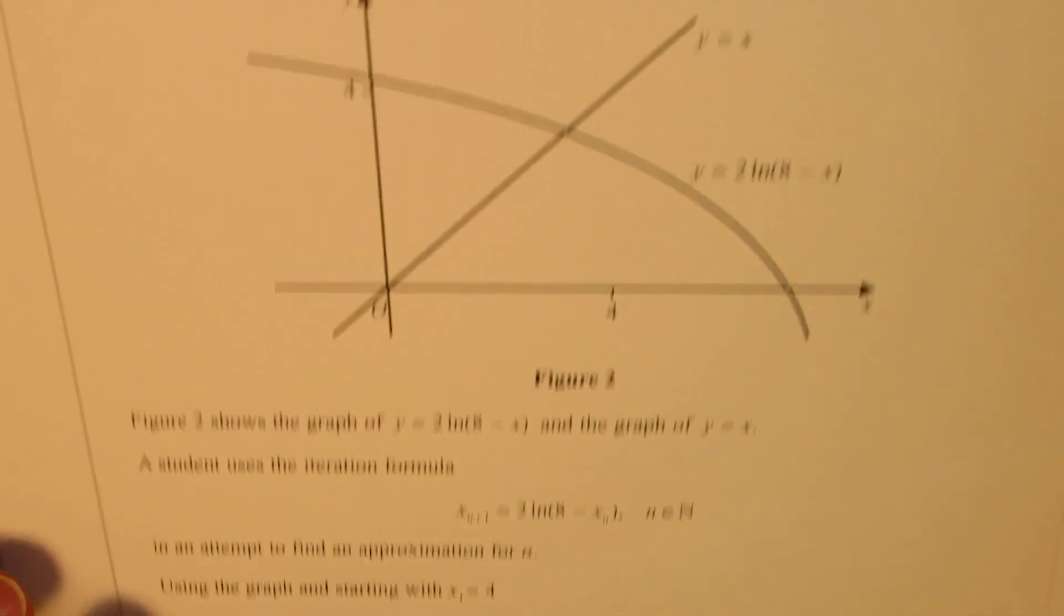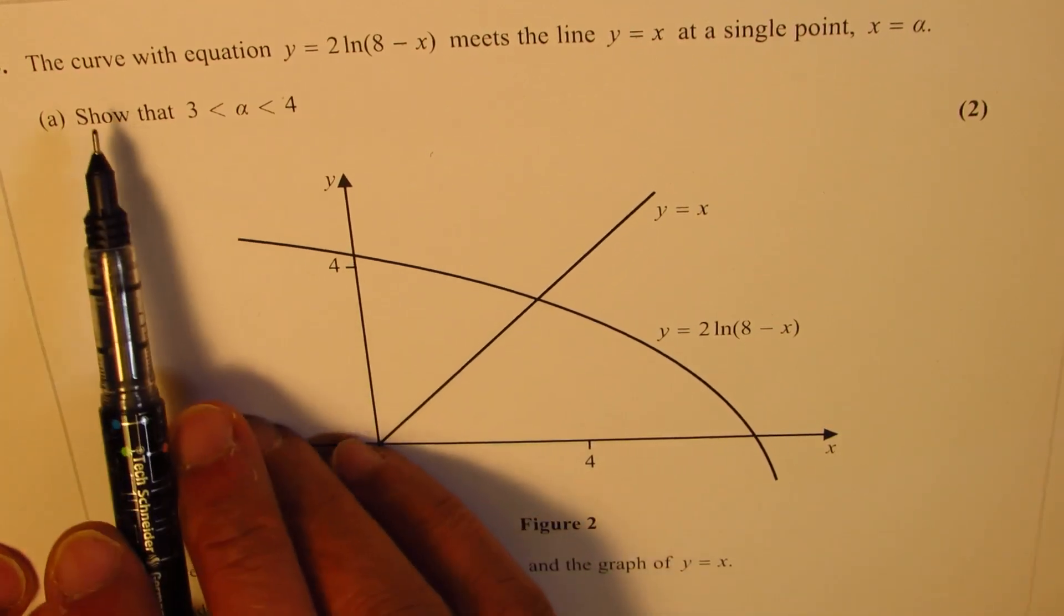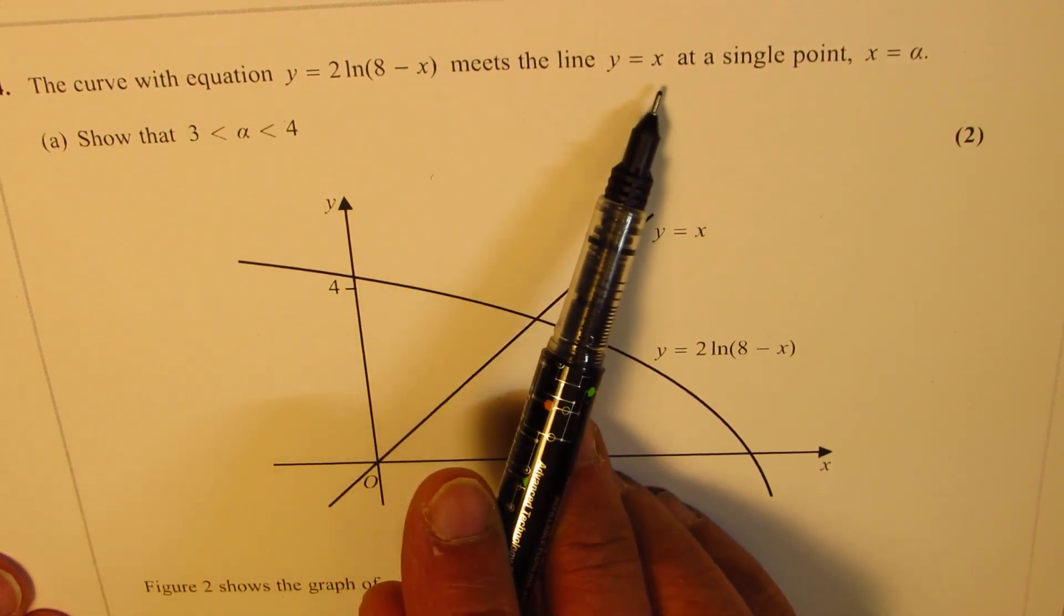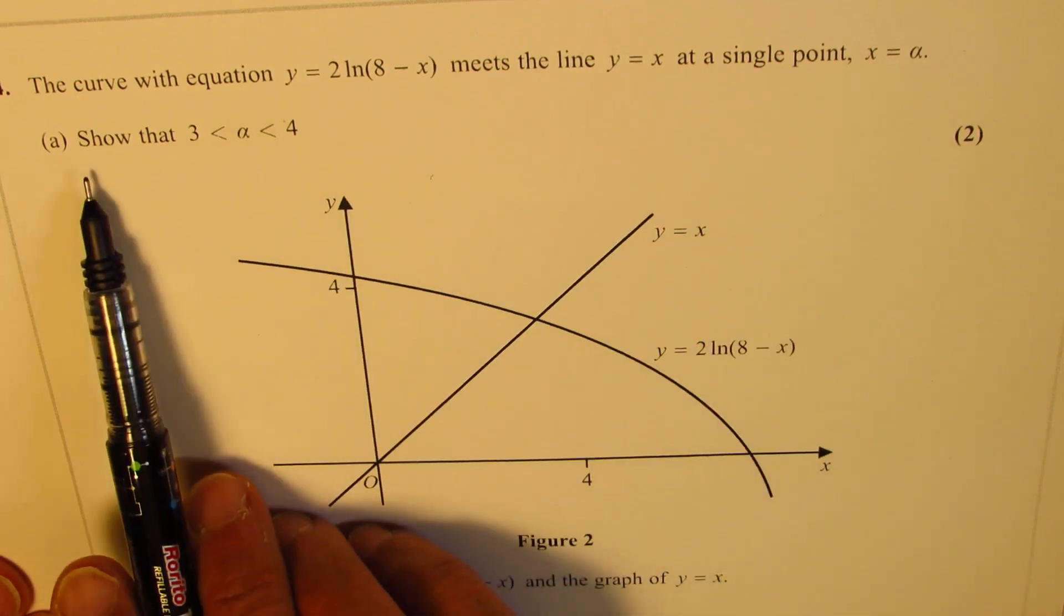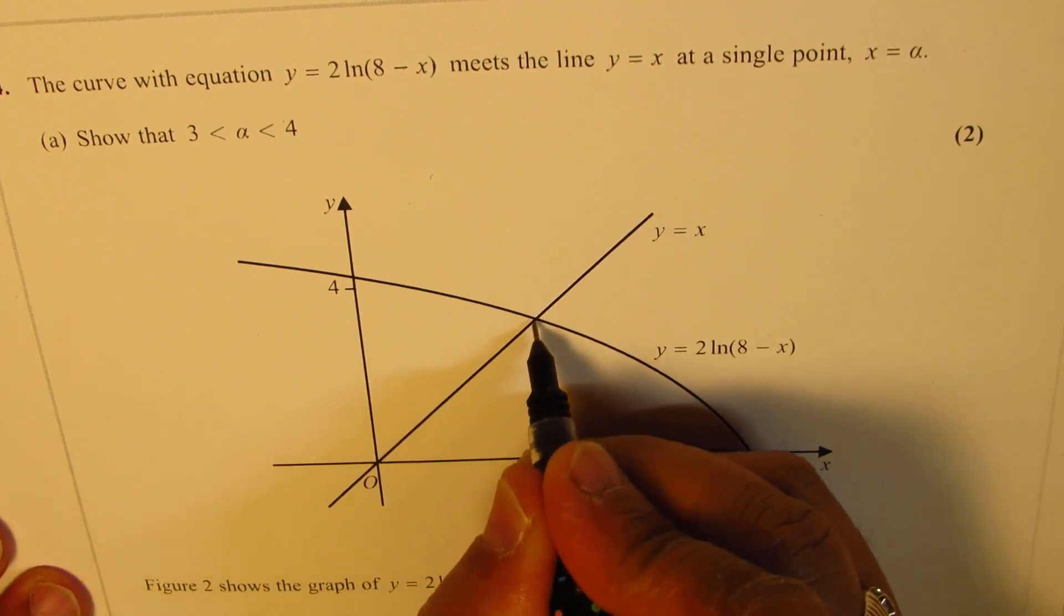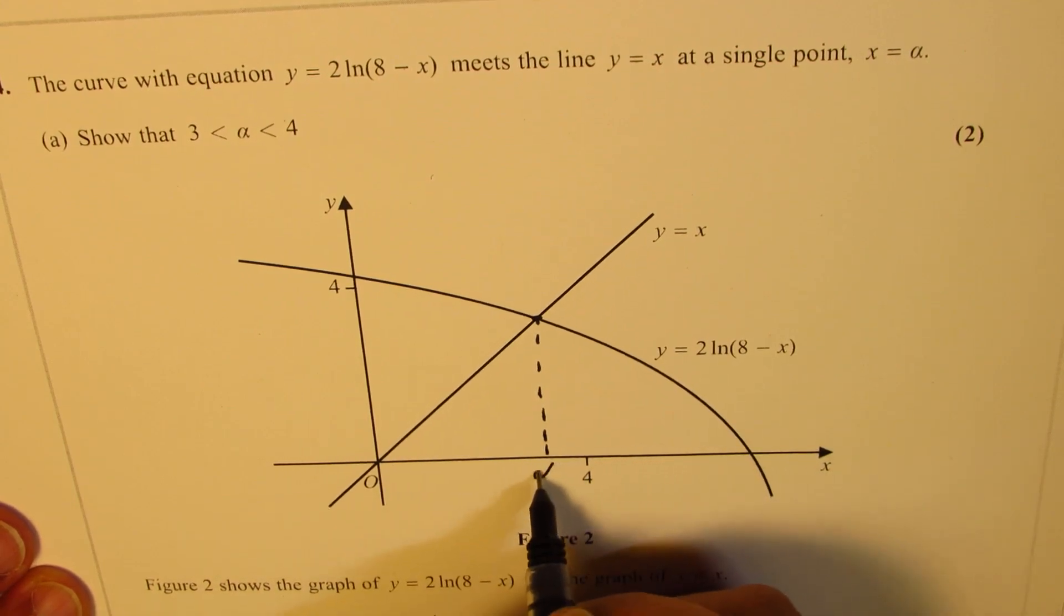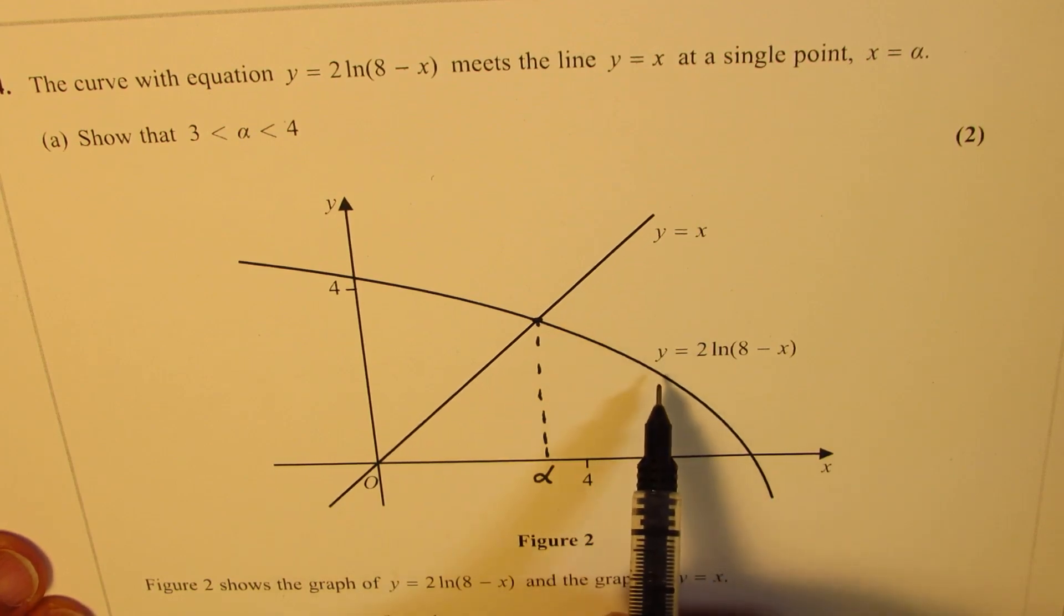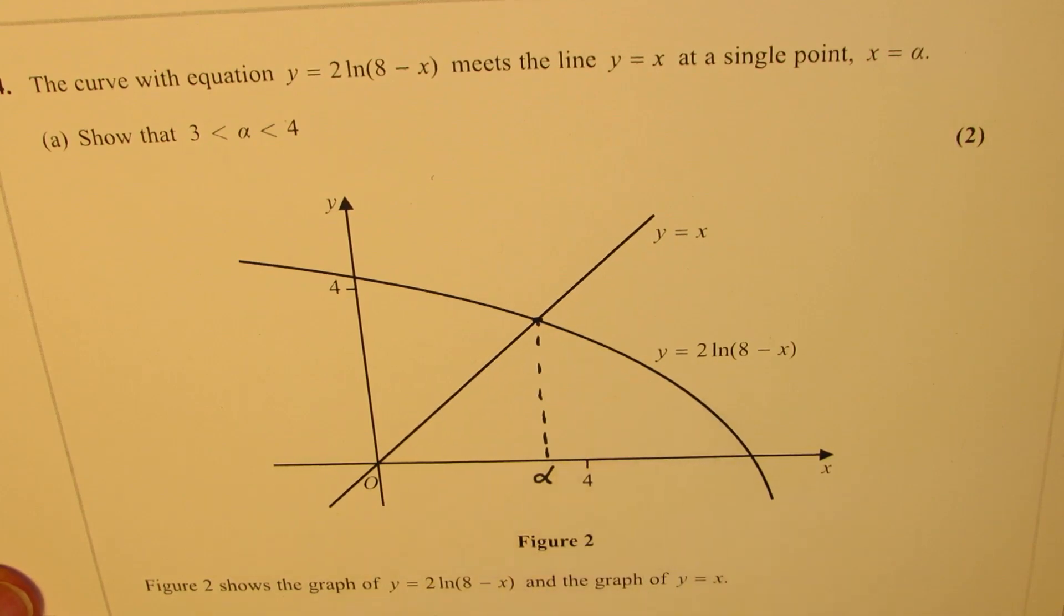To answer this question, when we see that this curve with this equation meets line y equals x at a single point x equals alpha, then we need to find this point at alpha. At this point, both these curves will have the same y value. I'll provide your solution right here.